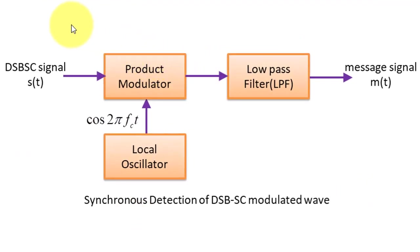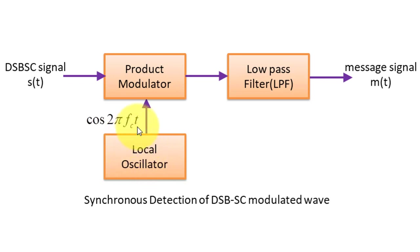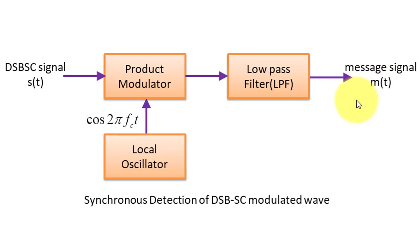This particular slide shows the DSBSC synchronous detection block diagram. At the input side, we have the DSBSC signal S(t), which is applied to a product modulator whose second input is the local carrier oscillator with value cos(2π·fc·t). This fc frequency is the same frequency used at the transmitting side during modulation. The product multiplier output passes through a low pass filter, and at the output we get the distortion-free message signal.